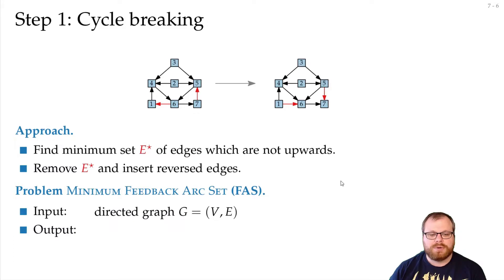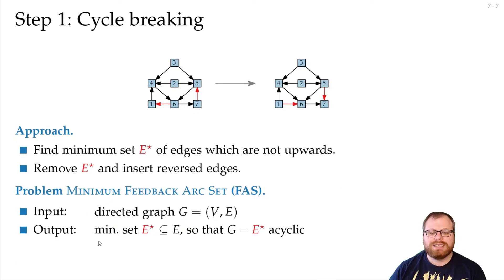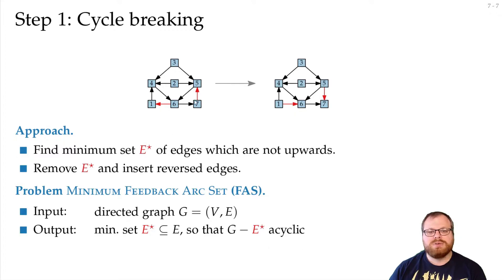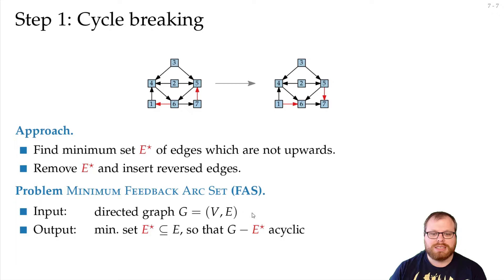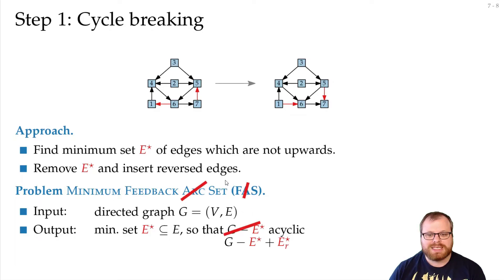For a directed graph, we want to find a minimum set E-star so that G minus E-star is acyclic. But this only means that if we remove those edges we get an acyclic graph; instead we also want to insert the reversed edges again. That is the problem of minimum feedback set.